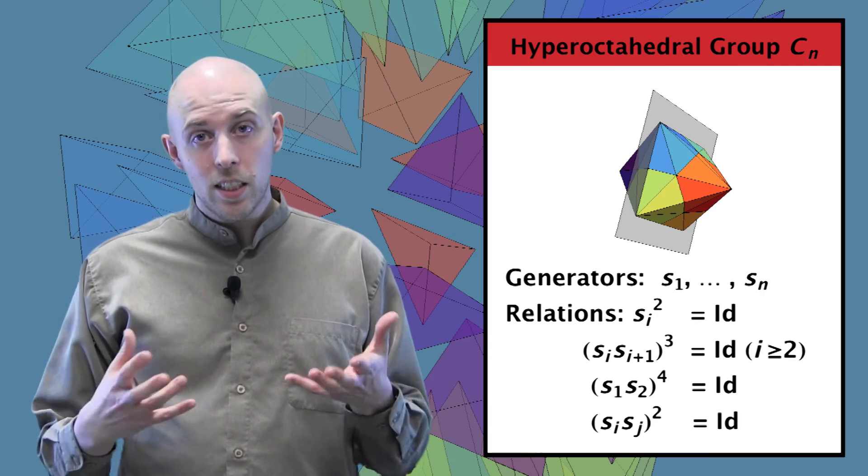Why 48? Well, just as in the symmetric group case, we understood it as the permutations of one, two, three, four, we can understand the symmetry group of the octahedron as the set of signed permutations of plus or minus one, plus or minus two, and plus or minus three.